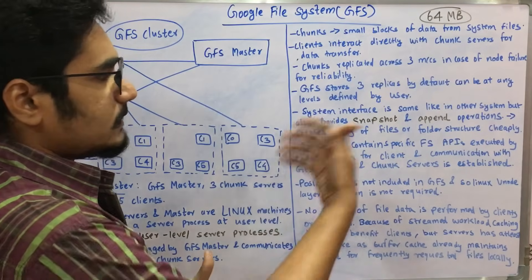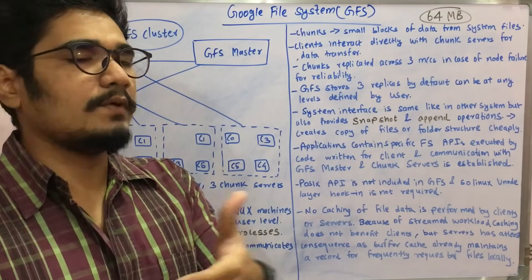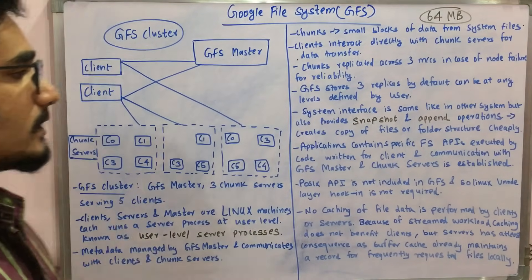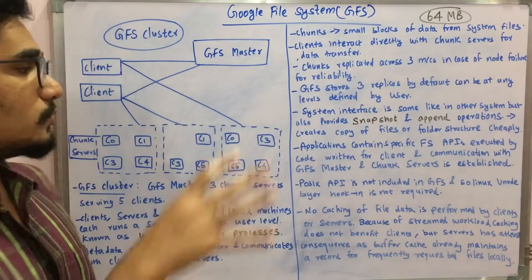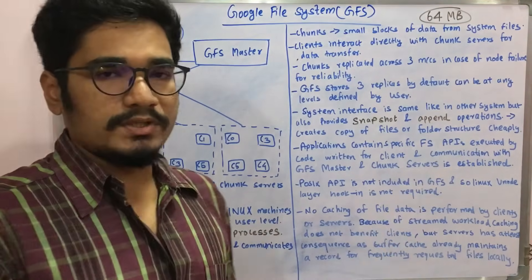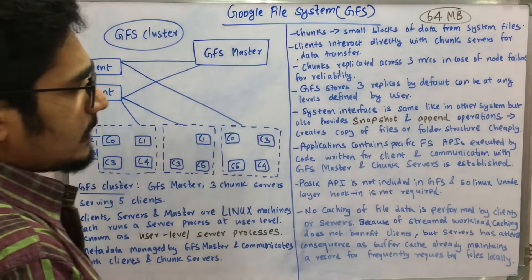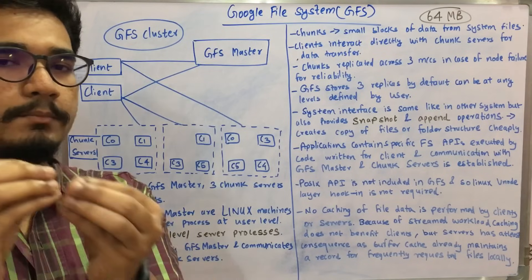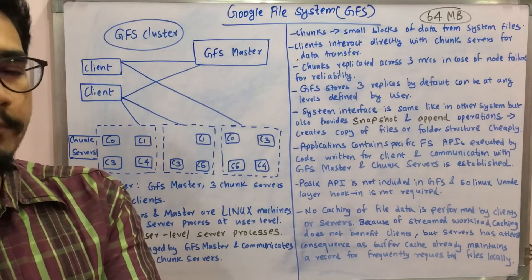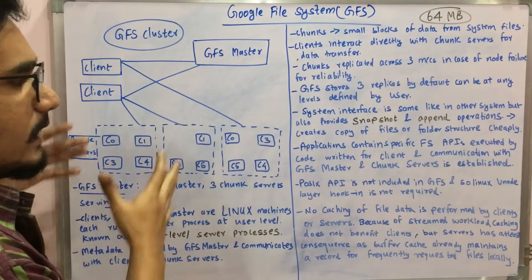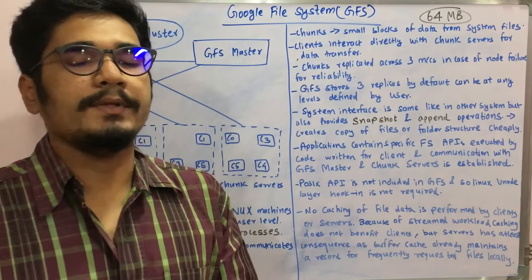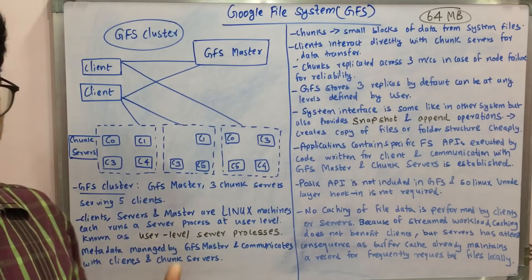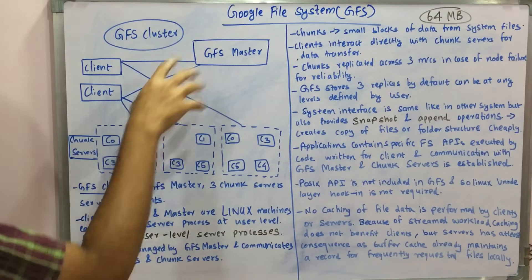The system interface is similar to any other system — with command line, graphical user interface, and so on. GFS especially provides a snapshot and record-append operation as part of its system interface, allowing creation of copies of files or folder systems more cheaply than other means. Applications contain specific file system FS APIs executed by code, and communication is established between the GFS master and chunk servers.